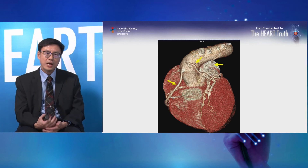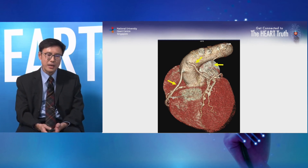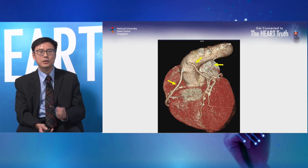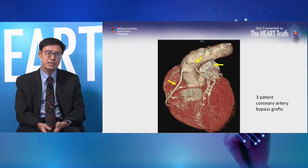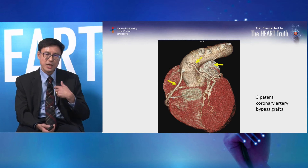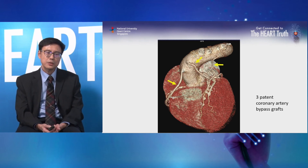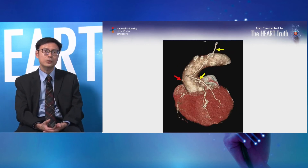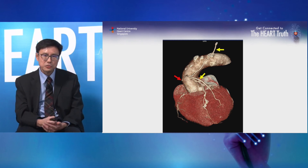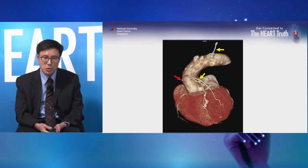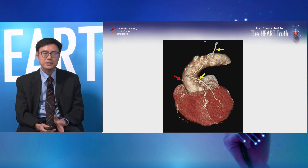We can also use CT coronary angiogram to evaluate patients after bypass surgery. In coronary artery bypass, the surgeon takes veins from the legs or arteries and connects them from the aorta to the distal part of the coronary arteries to bypass blocked or narrowed segments. Here you can see a patient with three patent coronary artery bypass grafts — one on the right side, one connected to the left anterior descending artery, and one vein graft to a branch of the left circumflex artery. In another patient, the graft on the right side is blocked — no contrast flows through, so it doesn't show up on CT, leaving only a small stump on the aorta where the graft was.